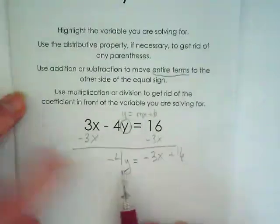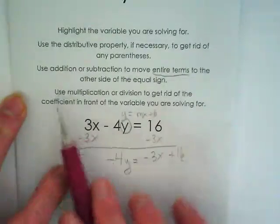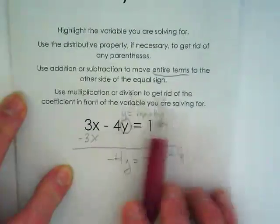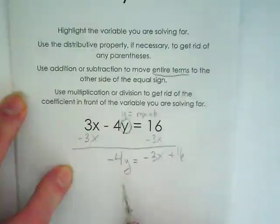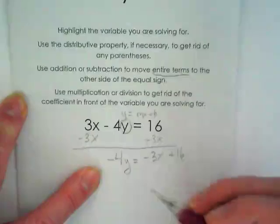Okay. The next step: use multiplication or division to get rid of the coefficient in front of the variable we're solving for. We're at that step now. What's in front of it? A negative 4y.